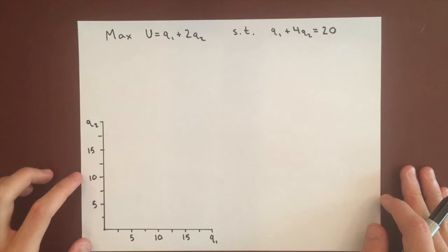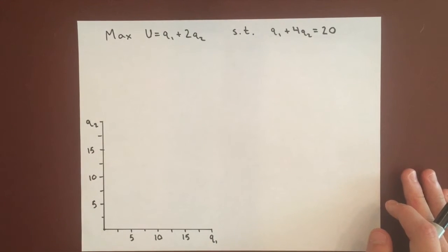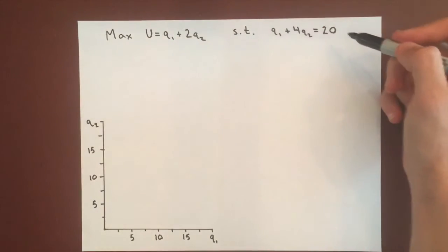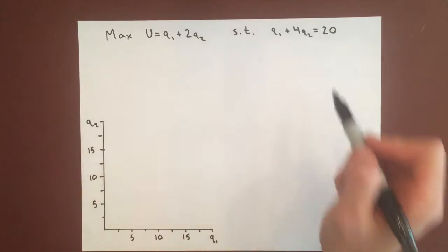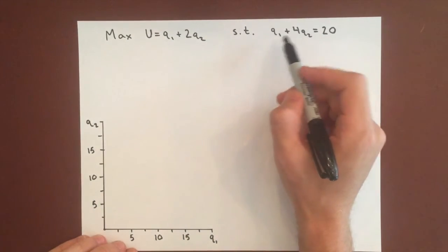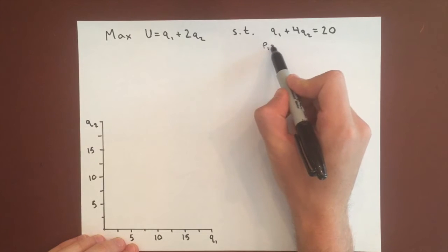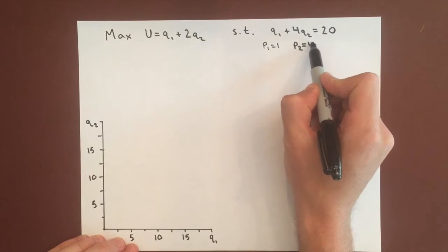In this example we're going to maximize a utility function of perfect substitutes subject to a budget constraint. We've just changed the prices a little bit from the previous video. In this case P1 equals 1 and P2 equals 4.